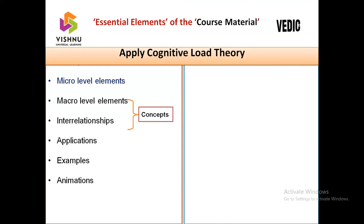Macro-level element interrelationship is a concept. For example, if you discuss in detail about a memory management system — the definition, types of memory, types of memory management systems, and the activities carried out in it, such as how the kernel supports memory management — these all constitute macro-level elements, and the interrelationship between these concepts becomes a topic.